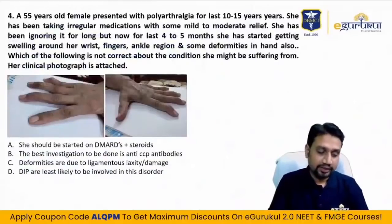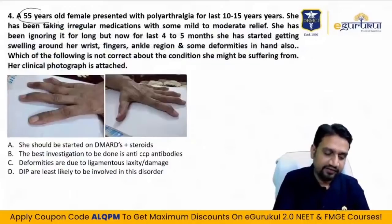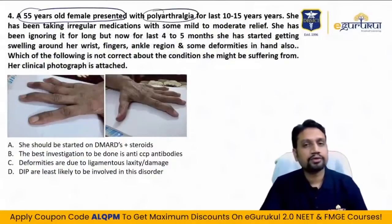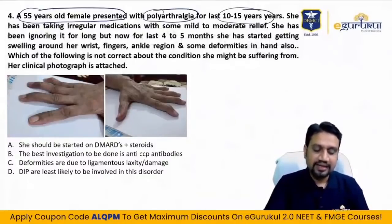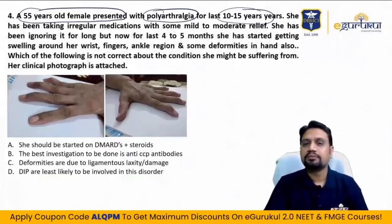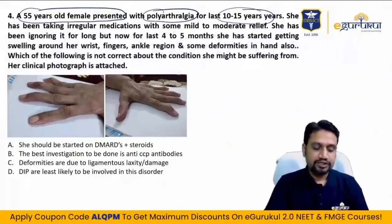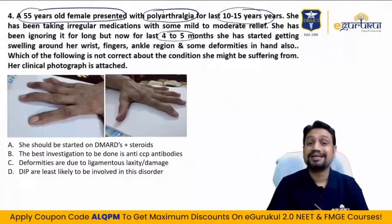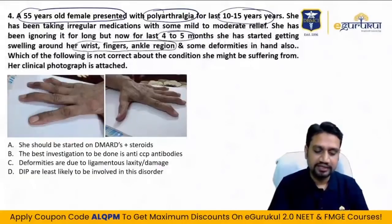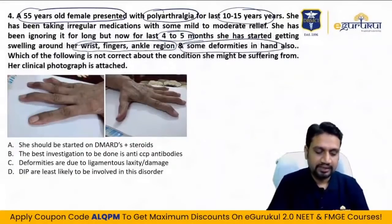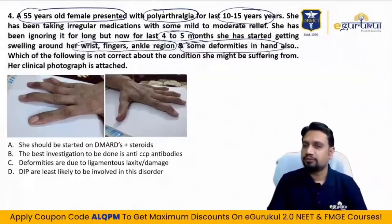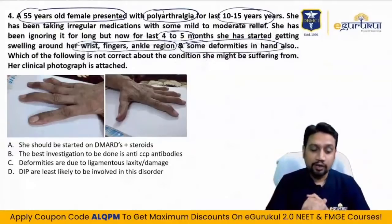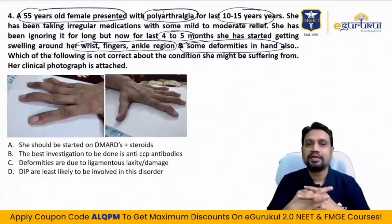Fourth question: a 55-year-old female presents with polyarthralgia for the last 10 to 15 years, with irregular medication giving mild to moderate relief. For the last four to five months she has started getting swelling around her wrist, finger, and ankle region, and some deformities in the hand. The clinical photograph is attached.